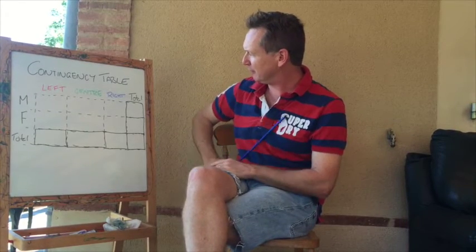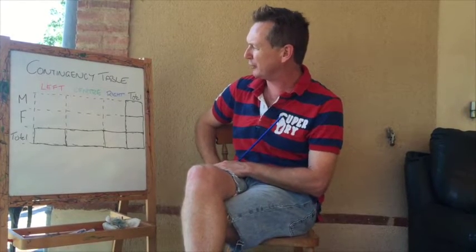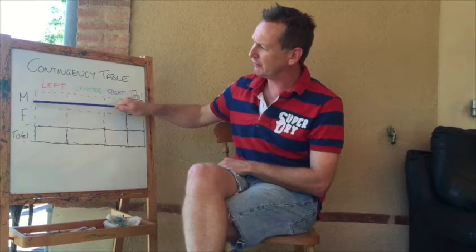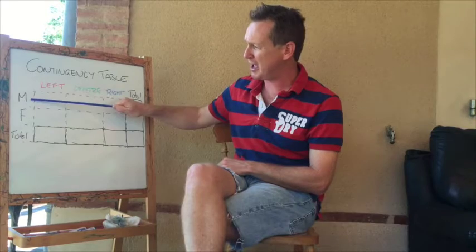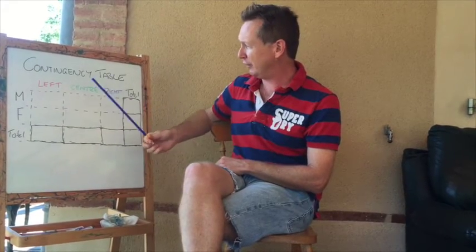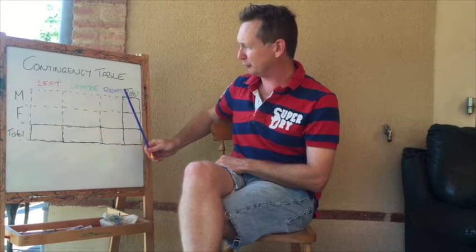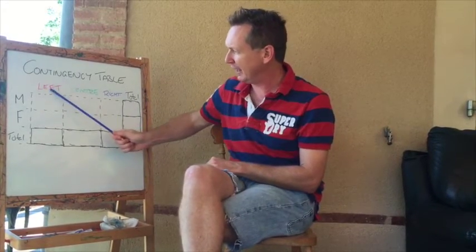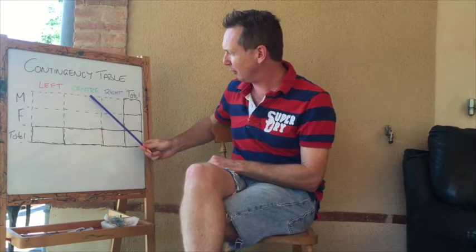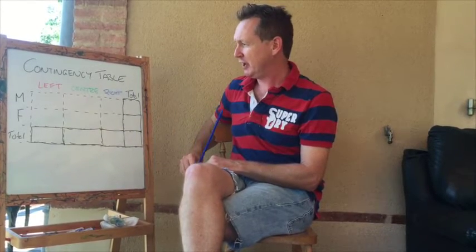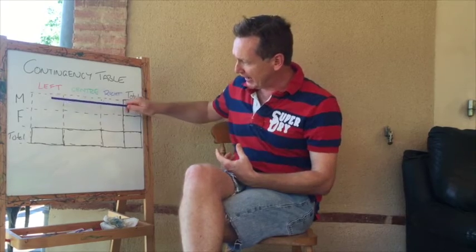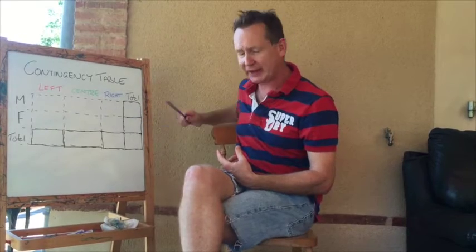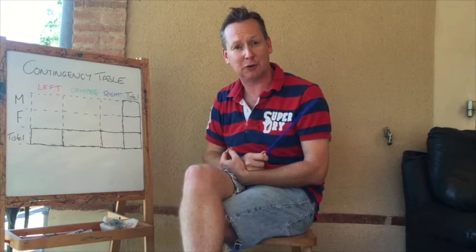This is an example of the table we would have — it's called a two-by-three contingency table. That's because for one question there are only two possible answers: male and female. For the other question there are three possible answers: I've decided to split political persuasion into left-wing, central, and right-wing politics. So in this two-by-three table there are in fact six possible combinations of answers to the questions in our survey.